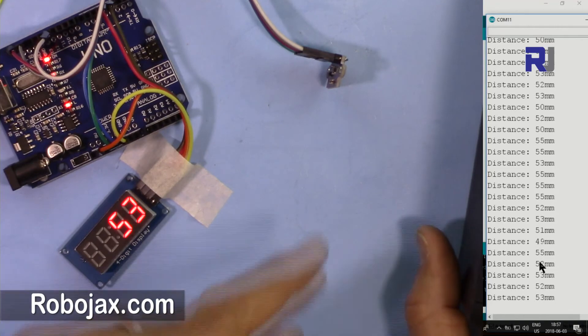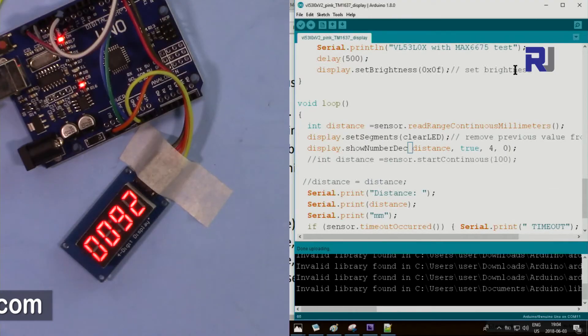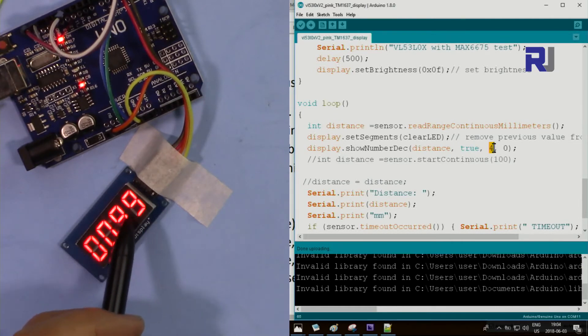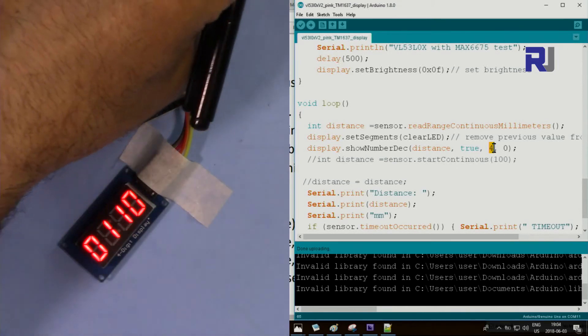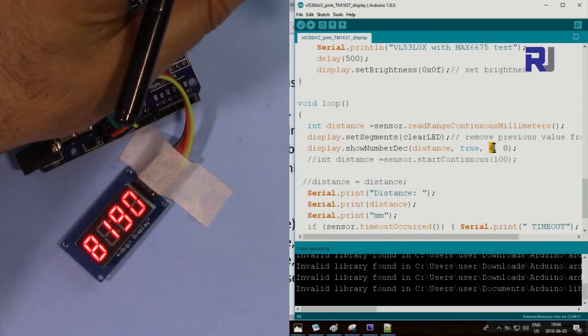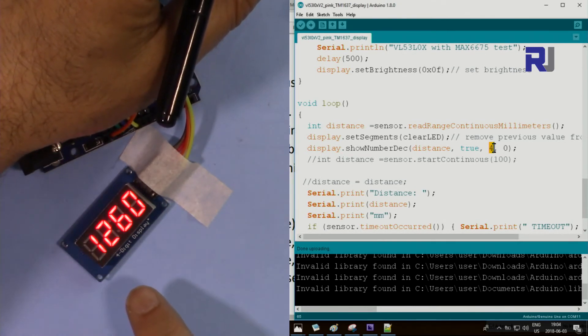This can measure up to two meters. If you want to display the zeros in front, make this true. When you set this true, all the digits will be displayed. Four means how many digits we expect - four digits, because the maximum is four digits. If you get it to the ceiling, that's the value from the wall: 1,921 millimeters, which is 192 centimeters that this measures.